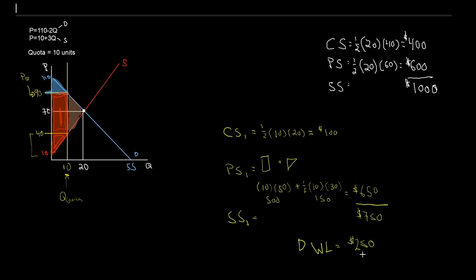Of course, we're going to have winners and losers — some agents being better off underneath this policy, some being worse off, and we want to figure out those distributional impacts. Consumers used to earn a surplus of 400 and are now earning 100, so consumers are clearly worse off. Producers used to earn 600 and are now earning 650, so producers are better off — they have won because of this policy. Overall, society used to have $1,000 worth of surplus and is now only receiving 750, so society on the whole has lost because we've enacted this quota. Consumers and society lose; producers win underneath our quota scenario.